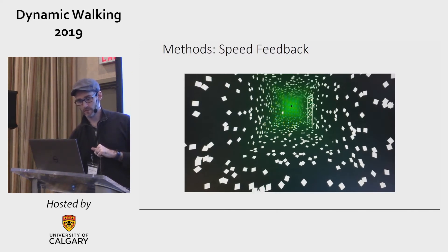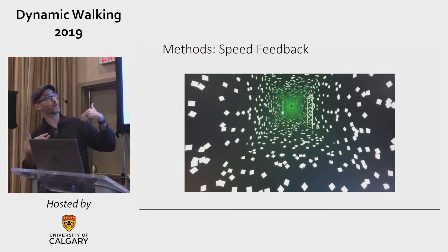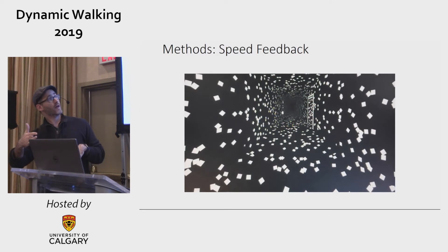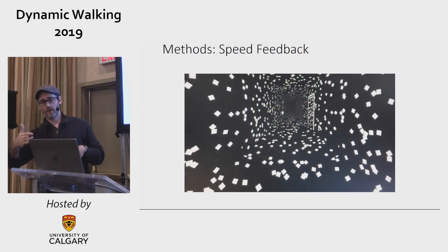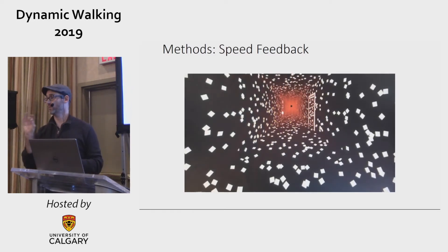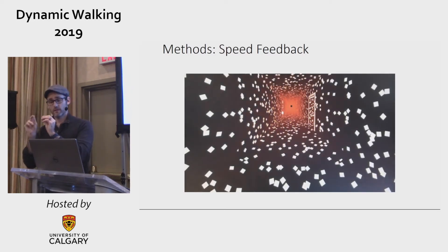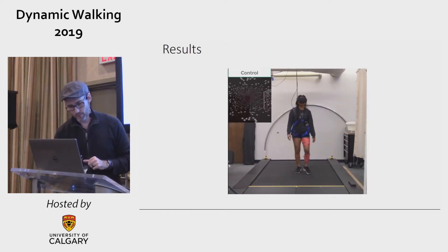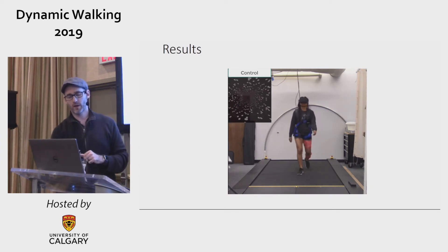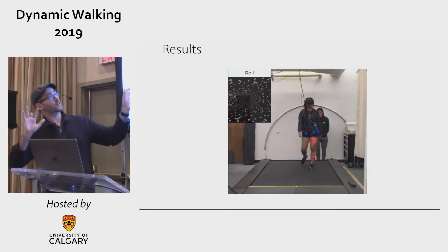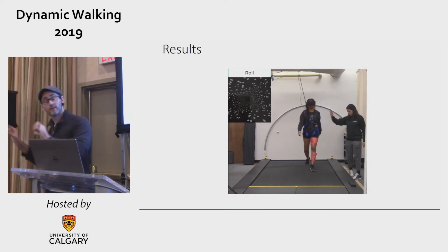To keep subjects walking at constant speed, we gave them visual cues: if they were too far back on the treadmill, the hallway turned green; in the center it was black; too far forward, it turned red. Subjects got really good at picking up very subtle light red-green cues to stay centered. They also had white noise played to them so they couldn't pick up anything external. In the video you can see subjects' reactions to a roll perturbation producing a lot of step-width adjustments.